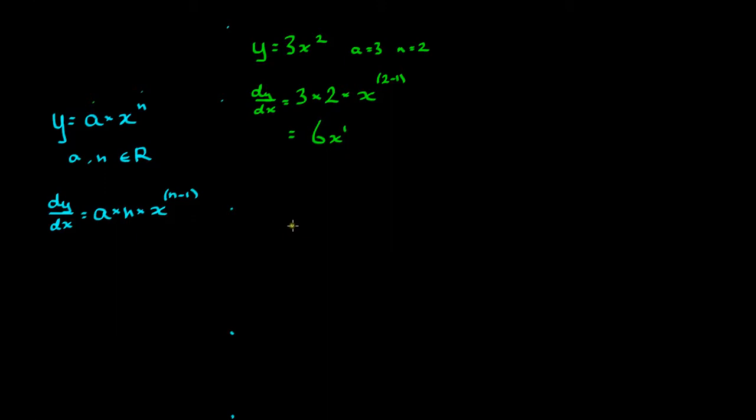A more complicated example is y equals 8 times x to the power of 3 on 4. I'll write down on the side here the values of the constants which I find very helpful for more complicated problems. A is equal to 8 and n is equal to 3 on 4.